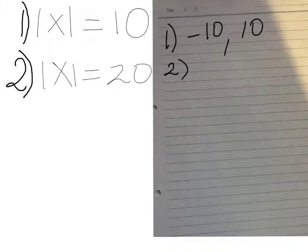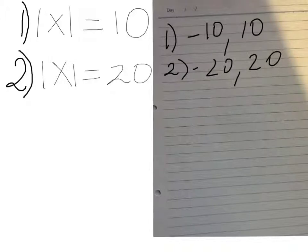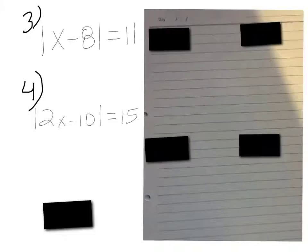Negative 10 and 10. And for number 2, you should ask yourself, what two numbers are 20 units from 0? Negative 20 and 20 are both 20 units from 0.